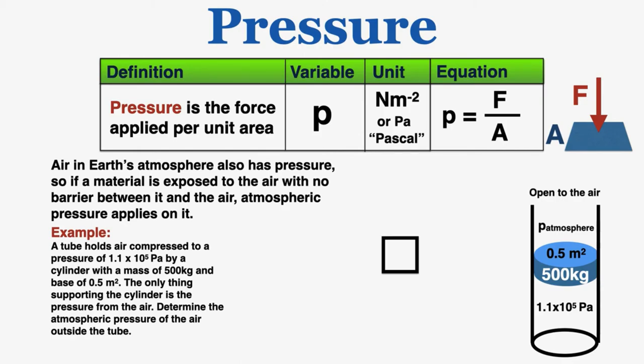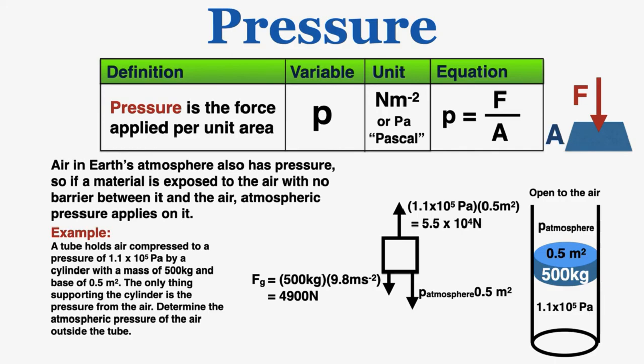I'll draw a free body diagram to figure this out. So I know that there's the force of gravity on this object pulling it down, which is equal to 4,900 newtons because it's mass times the acceleration of gravity. There's also an upward force from the pressure inside the tube, and that force I know is equal to the pressure times the area, which is equal to 5.5 times 10 to the fourth newtons. And because there's air with pressure above the blue object, that pressure must also be pointing down on the blue object. So that force is going to be equal to the atmospheric pressure of Earth multiplied by the area that it's applying to. I also know that because this mass is not accelerating up or down, it's just standing still, the net force must equal zero as a result. That means that these three vectors added together have to equal zero.